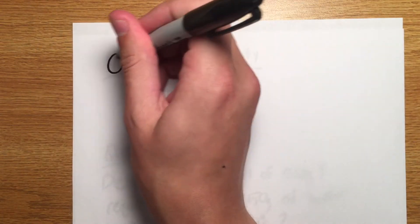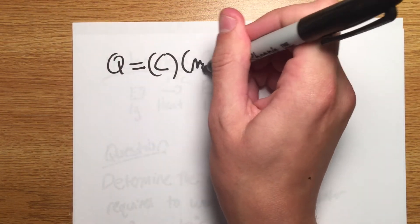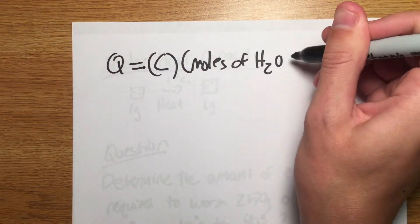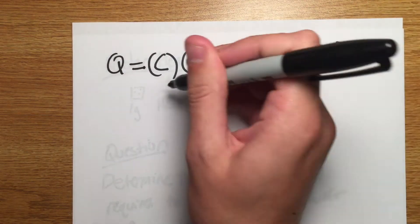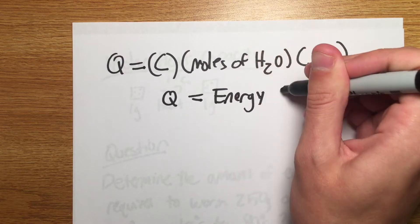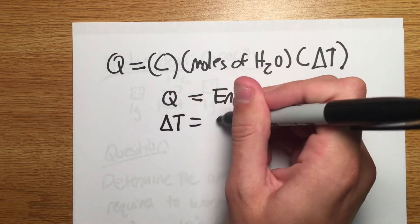The equation to determine the amount of joules needed to raise the temperature of water is Q equals molar heat capacity times moles times delta T, where Q is the energy required and delta T is the change in temperature.